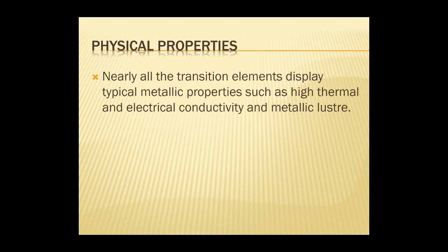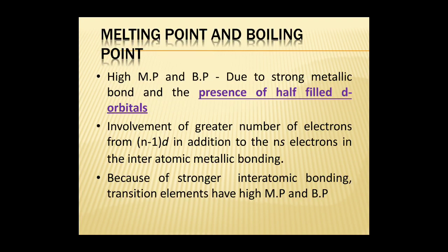Now let us look at the physical properties of this group. Nearly all the transition elements display typical metallic properties such as high thermal and electrical conductivity and metallic lustre. The first physical property is melting point and boiling point. Transition metals have high melting point and boiling point due to strong metallic bonding and the presence of half-filled D orbitals.